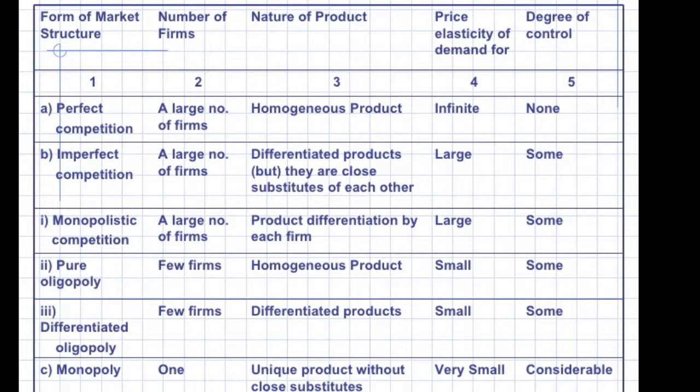And you can see the number of firms: in monopoly one, in monopolistic competition more than one, in perfect competition many.